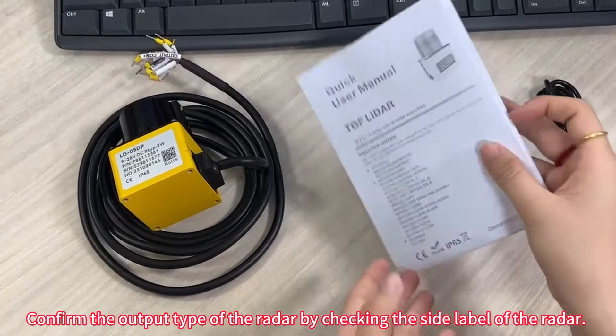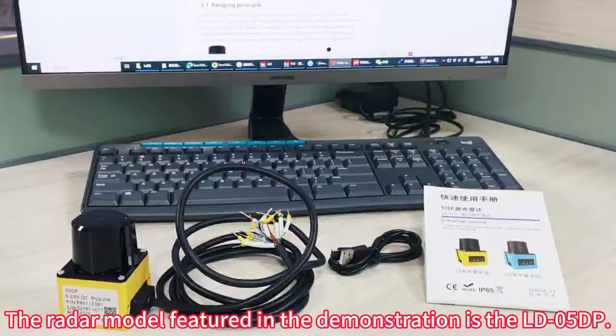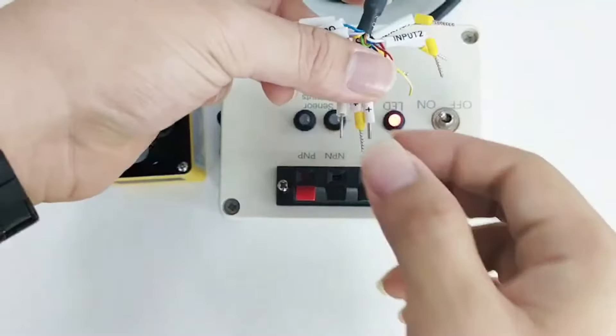Confirm the output type of the radar by checking the site label of the radar. The radar model featured in the demonstration is DLD05 DP. The measurement origin is at the center of the black top, and the effective measurement range is from 225 degrees to -45 degrees.